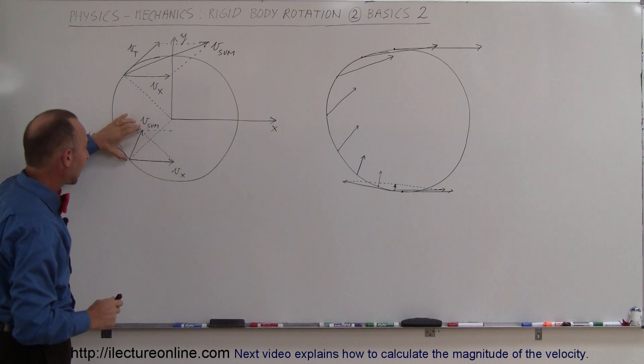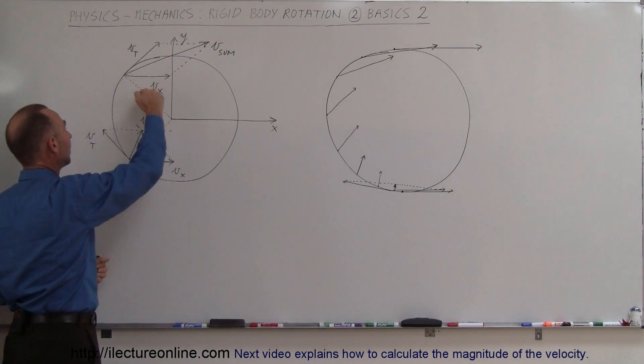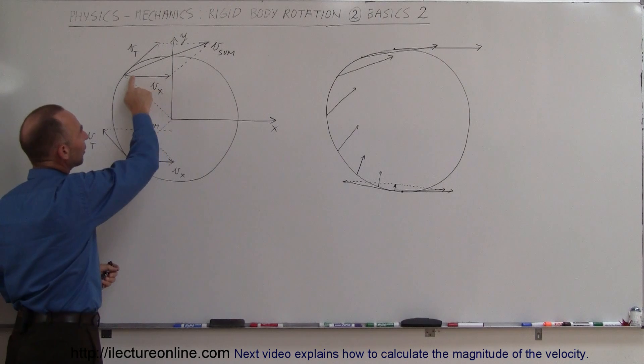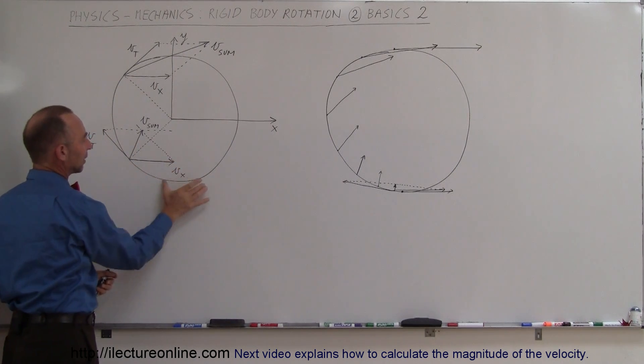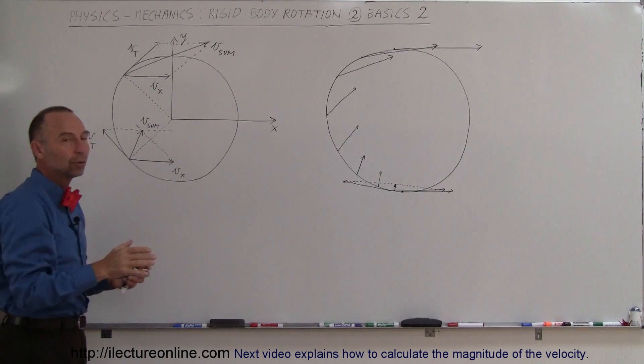A little bit further up on the tire, let's say 45 degrees above the negative x-axis, notice we still have the same horizontal velocity V sub X as we have over here. That will be the same everywhere along the wheel.